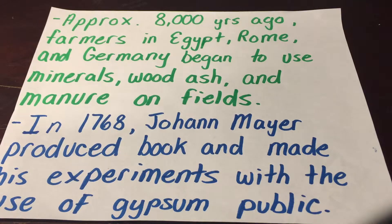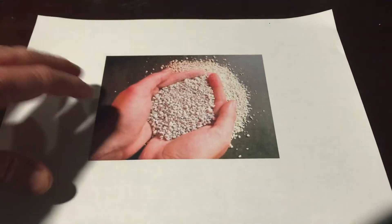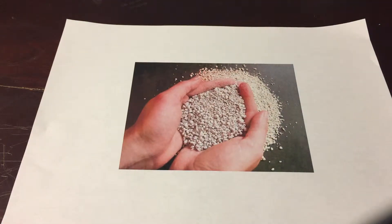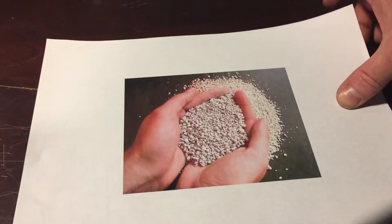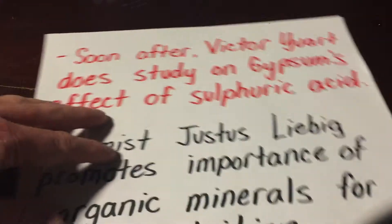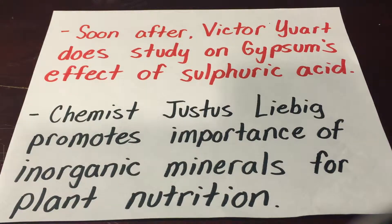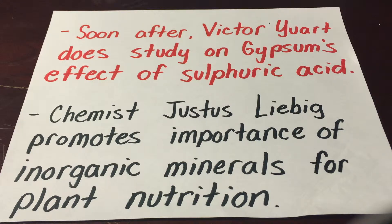Then in 1768, Johann Mayer produced a book and made his experiments with the use of gypsum public. His experiments went on to be used by many scientists across the world researching the use of gypsum. Soon after Mayer's study, Victor Uhark did a study on gypsum's effect on sulfuric acid. He believed that gypsum acted on the effect of the sulfuric acid in the composition. He determined this by looking at ashes of turf that contained the sulfate of ion and luma — the same thing that you would find in gypsum.